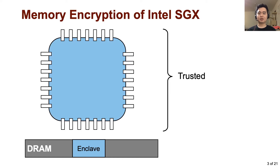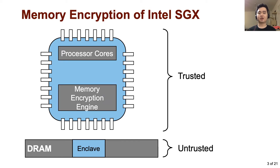In TEE, only the CPU package is trusted, so any external hardware components such as DRAM are all untrusted. One of the most mature TEEs, Intel SGX, has a strong threat model against external DRAM. Since it assumes that an adversary can arbitrarily read or write the memory, the processor includes a hardware extension called the memory encryption engine in their memory controller. In SGX, all enclave data leaving the processor package is transparently encrypted by this memory encryption engine.